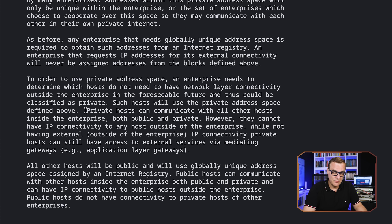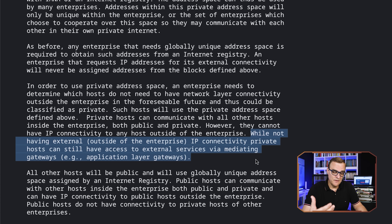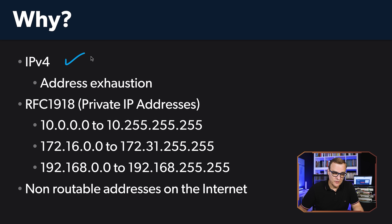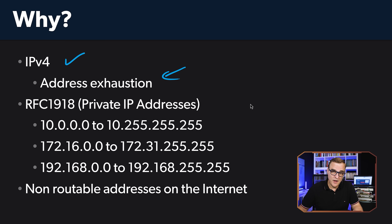From RFC 1918: private hosts can communicate with all other hosts inside the enterprise, both public and private. However, they cannot have IP connectivity to any host outside of the enterprise. They can only communicate externally via application layer gateways — in other words, routers or another device like a firewall that NATs their IP address. We are running out of IPv4 addresses. There are too many devices on the internet for the roughly 4.3 billion IP addresses we have available. NAT allows us to conserve IP addresses by using private IP addresses internally.